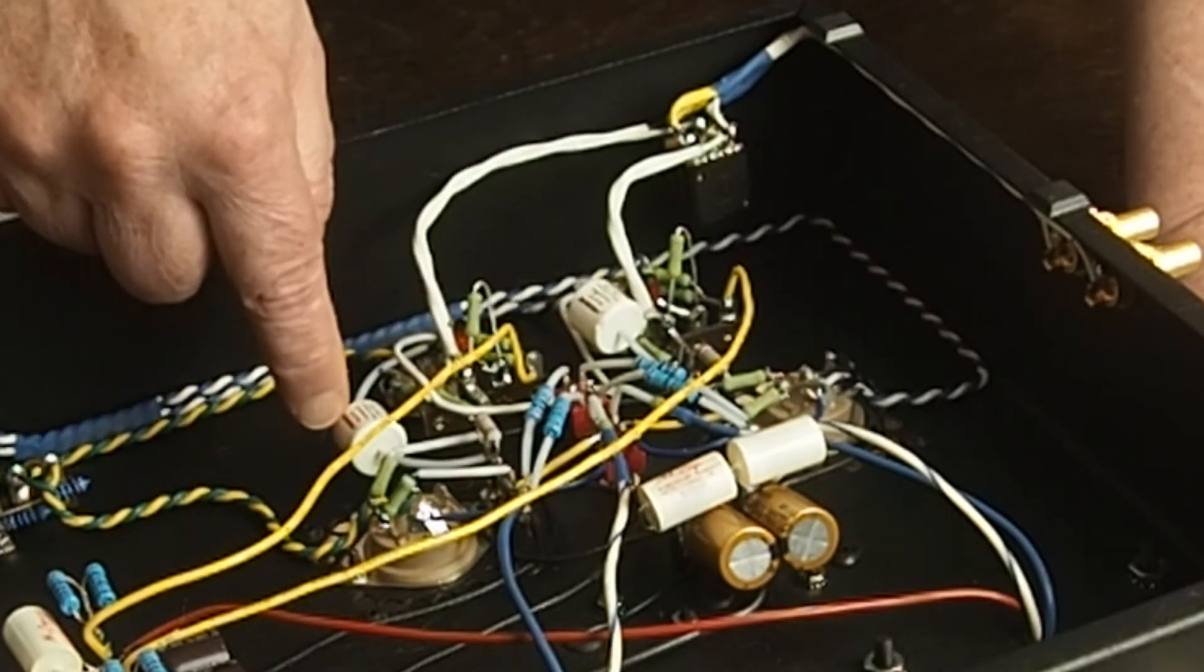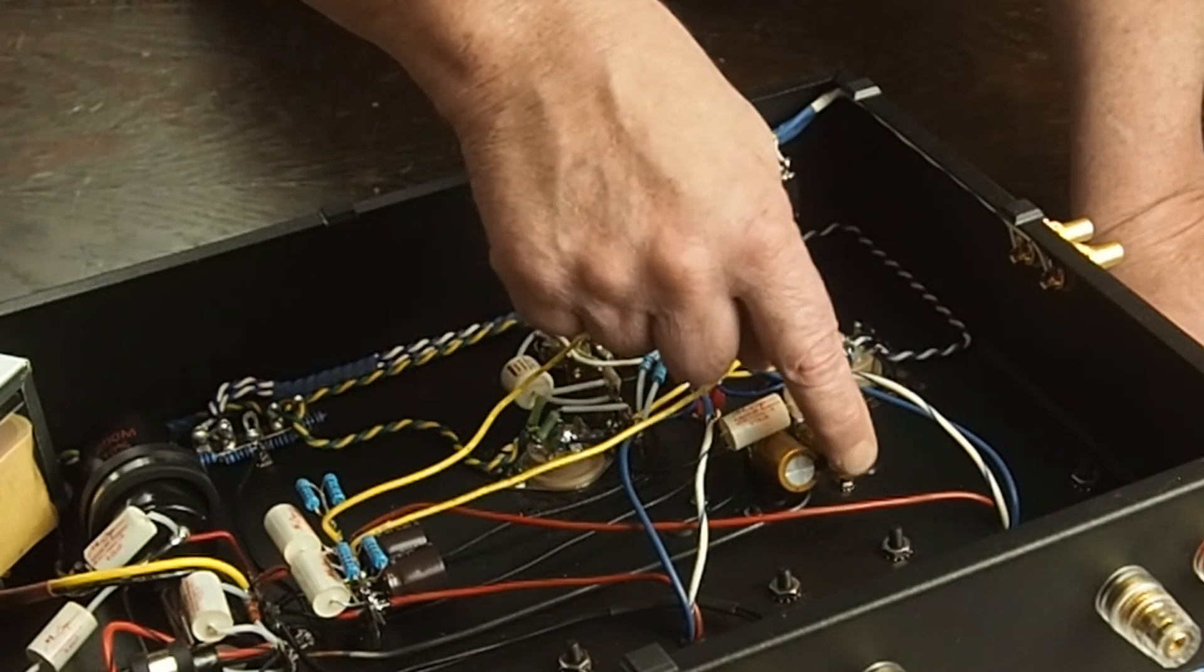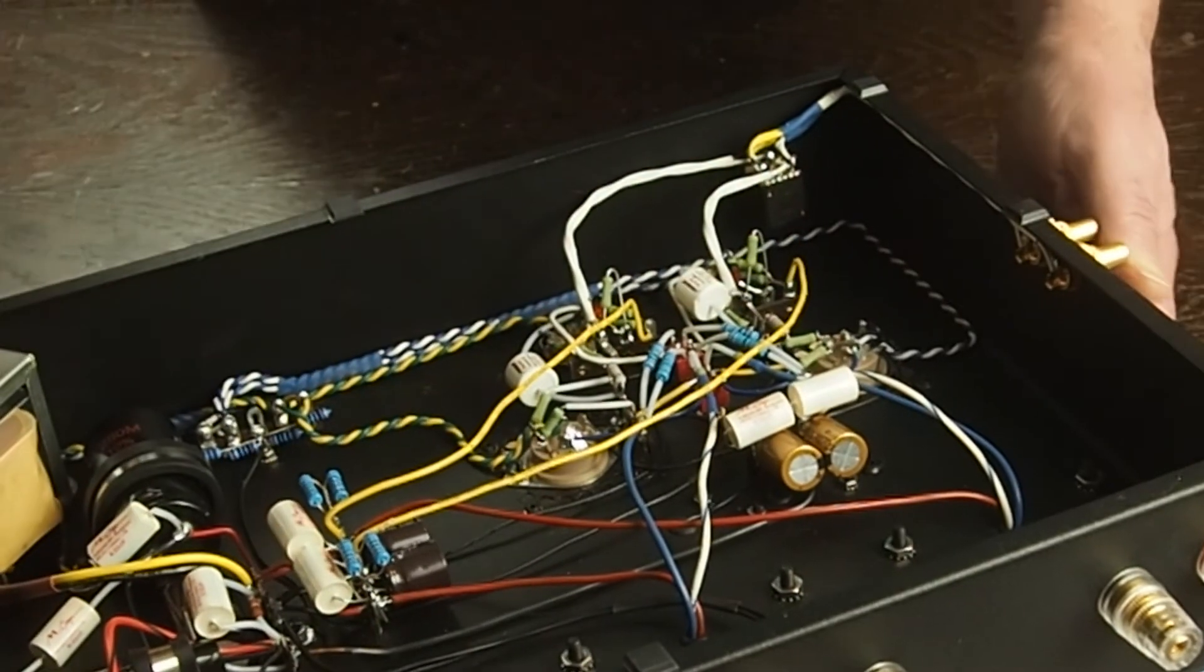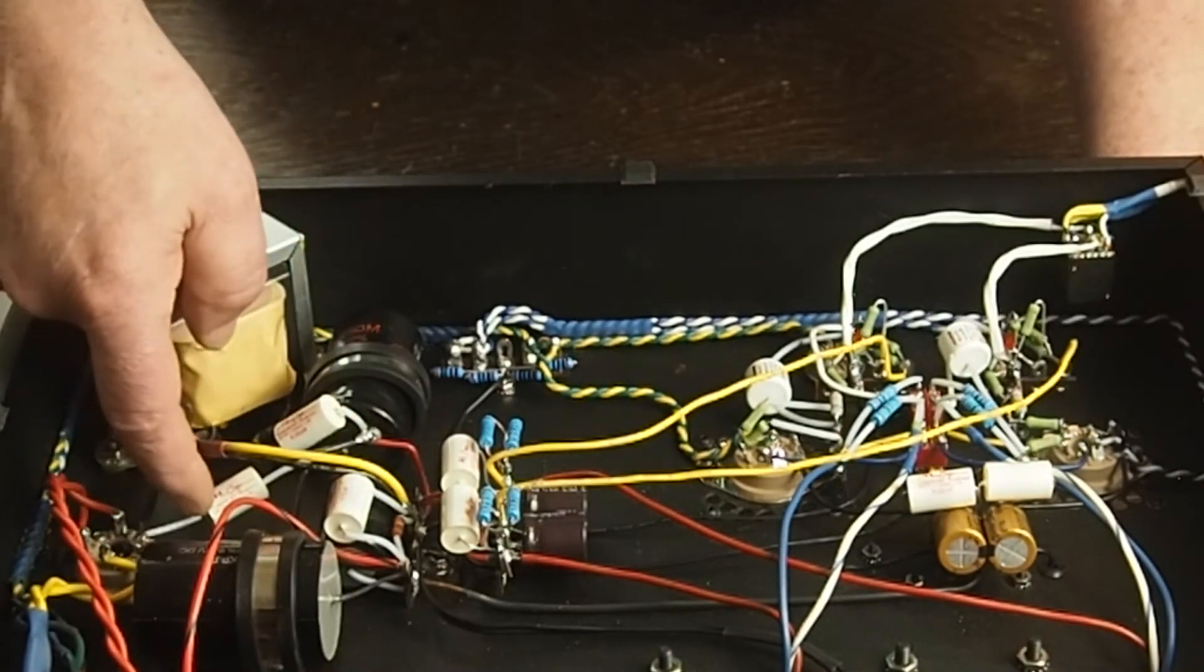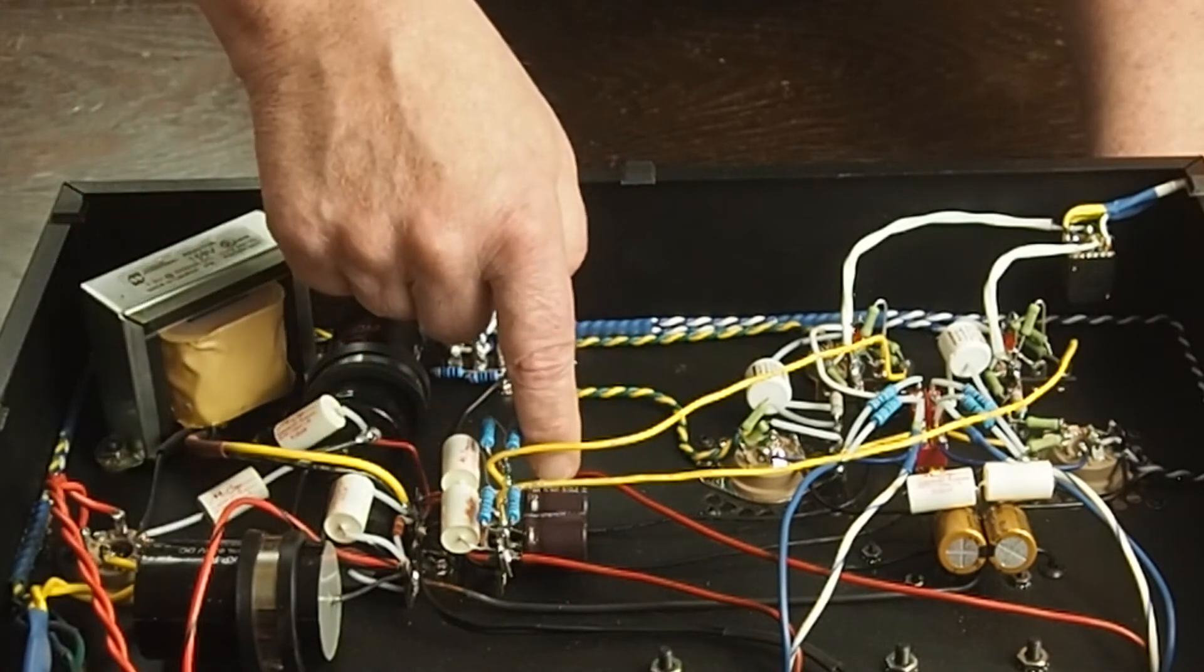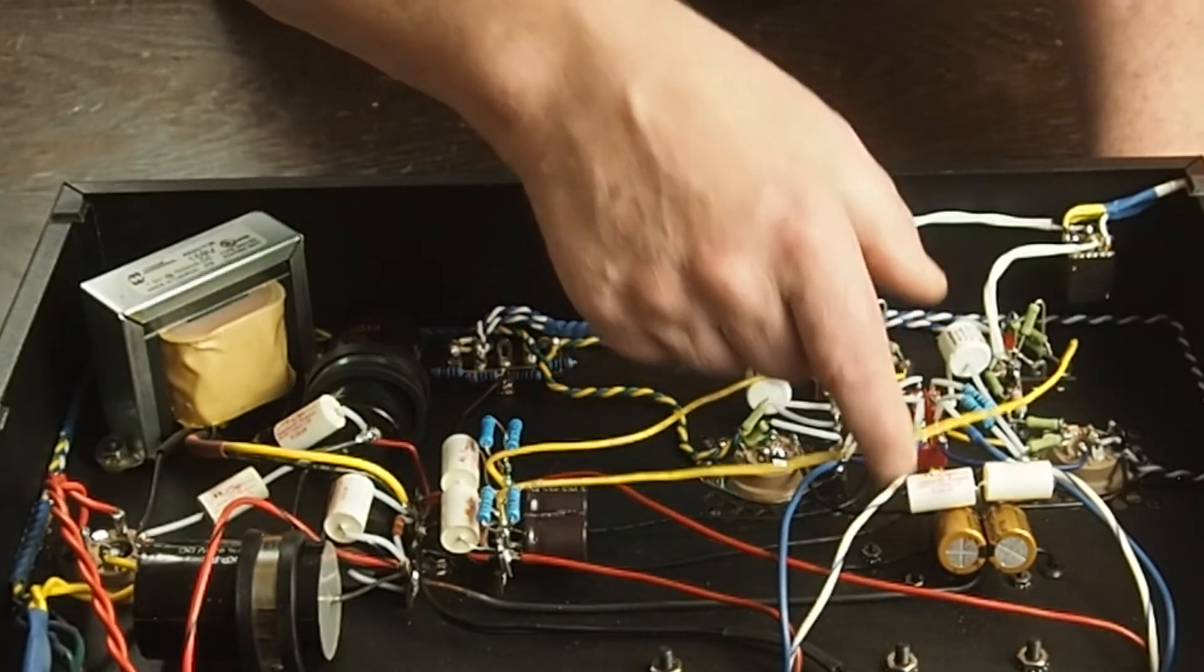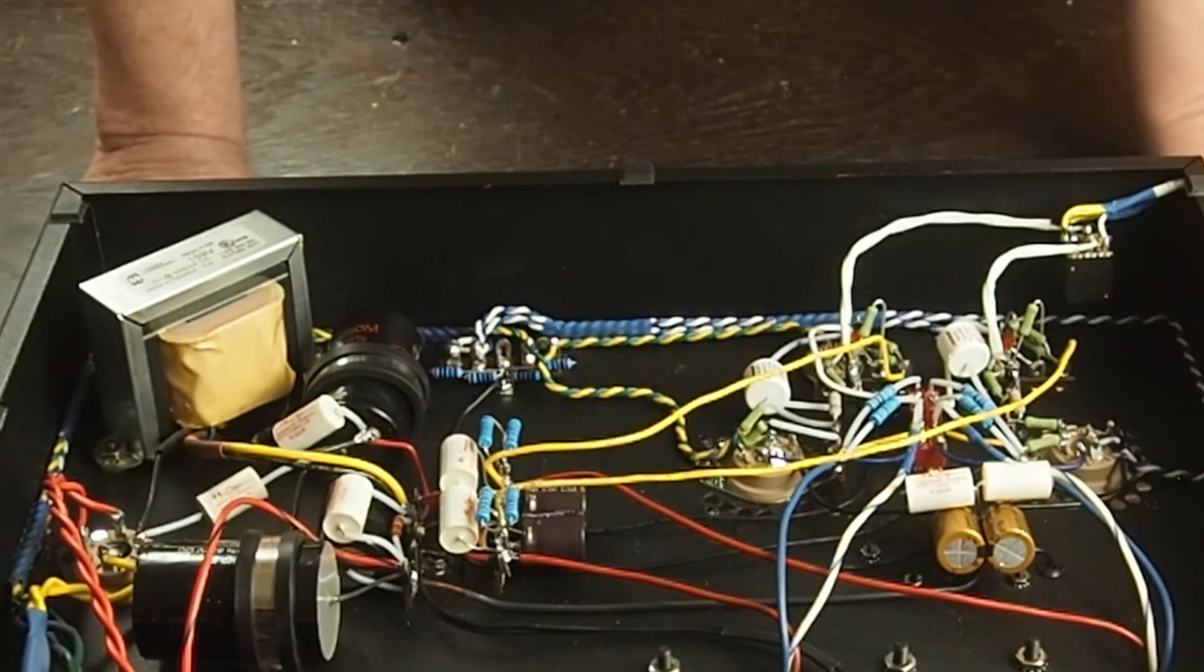These are the coupling caps. These are the cathode capacitors with bypass caps. I put bypass caps on every capacitor in the amplifier. These are very small value, 0.33 microfarad film caps that are contributing to helping the amplifier be so quiet.